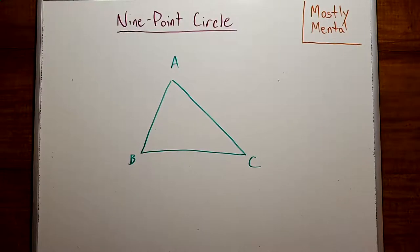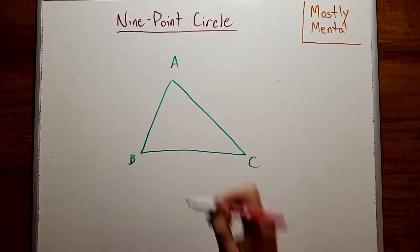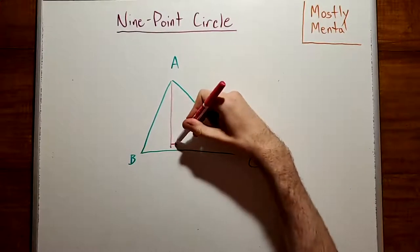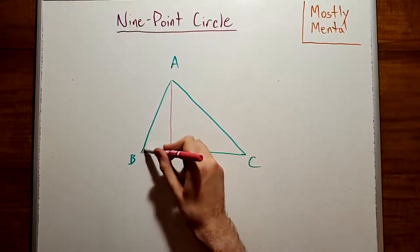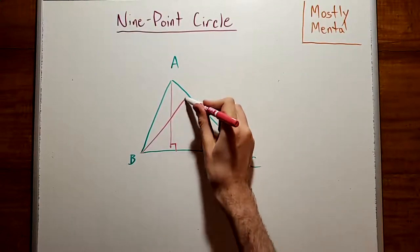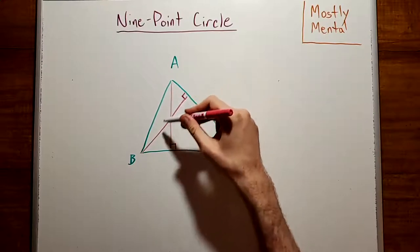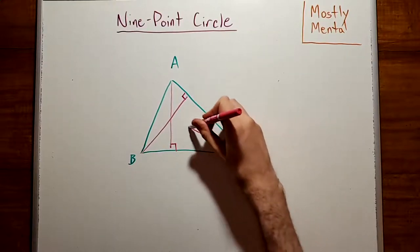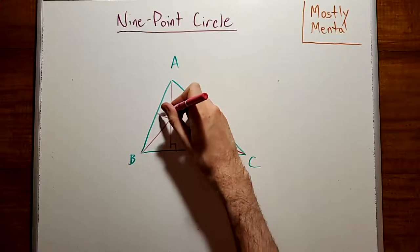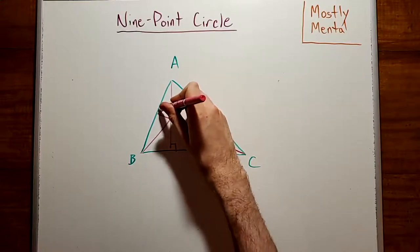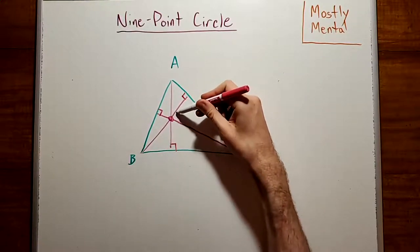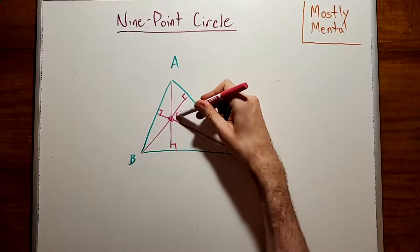The third center I want to talk about is the orthocenter. Drop a perpendicular line from each vertex to the opposite side — these lines are known as altitudes. And, as you've probably guessed, once again they all intersect at a point, known as the orthocenter H.